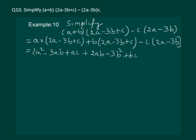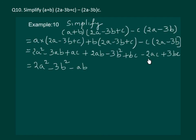Opening the third bracket: minus c into 2a gives minus 2ac, and minus c into minus 3b gives plus 3bc. Now detecting like terms: minus 3ab and plus 2ab combine to give minus ab. Plus ac and minus 2ac combine to give minus ac. And bc plus 3bc gives plus 4bc. Hence this is our required answer.